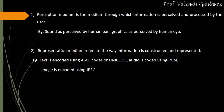Let's begin with the first type of medium, that is the perception medium. Perception medium is the medium through which information is perceived and processed by the user. For example, if any person is talking with you, that is heard audibly by your ear. Through the ear, you can hear whatever statement was said, and then it is processed in your mind. This is called the perception medium.